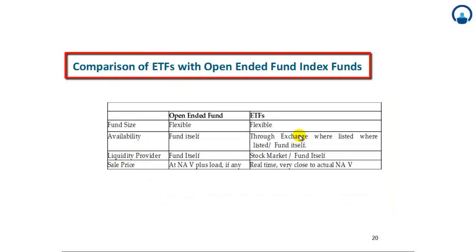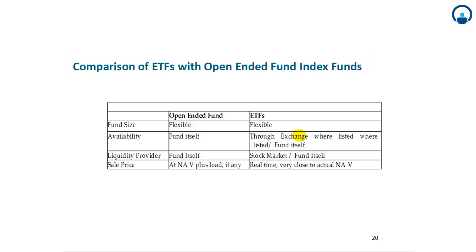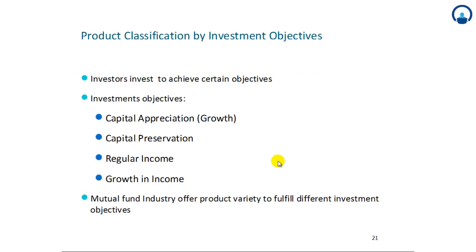Let's look at a comparison of an ETF with an open-ended index fund. For an open-ended fund and an ETF, fund size is flexible in both cases. Availability is through the fund itself for an open-ended fund, and through the exchange where listed or the fund itself for an ETF. The liquidity provider is the fund itself for an open-ended fund, while for an ETF it is the stock market or the fund itself. Sale price is at NAV plus load if any for an open-ended fund, and in real time very close to actual NAV for an ETF. This completes our first session. In the next session we will look at product classification by investment objectives.